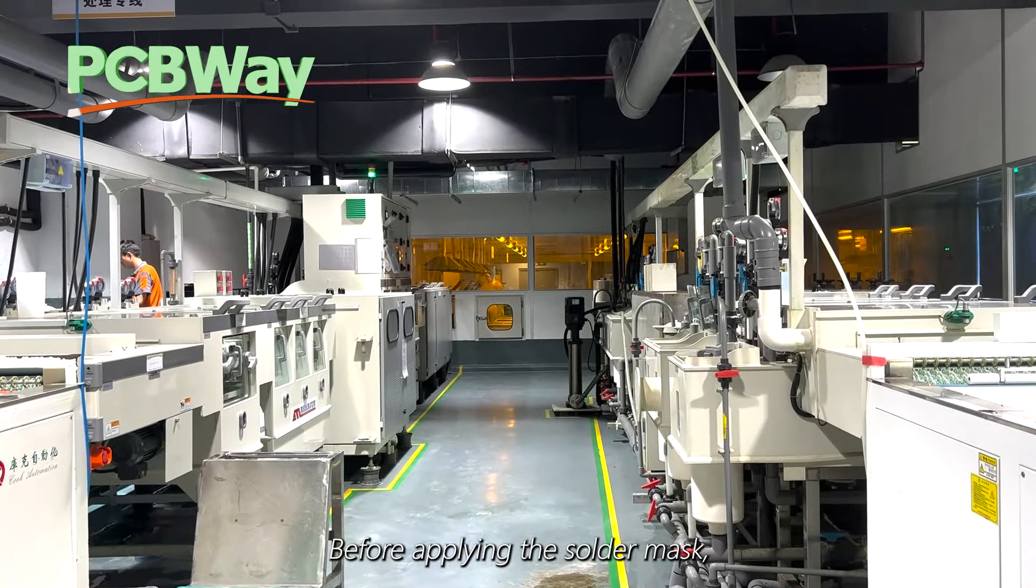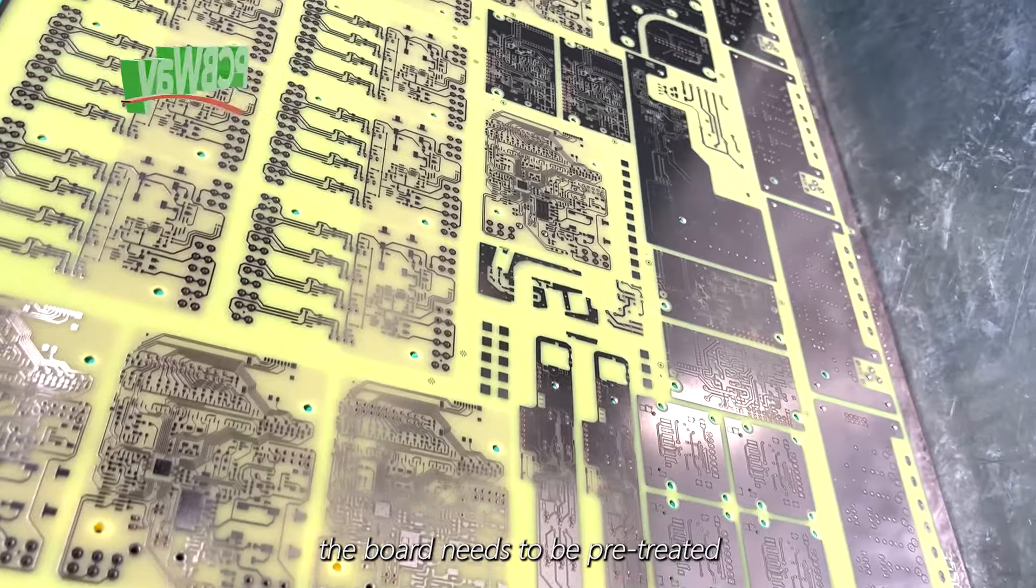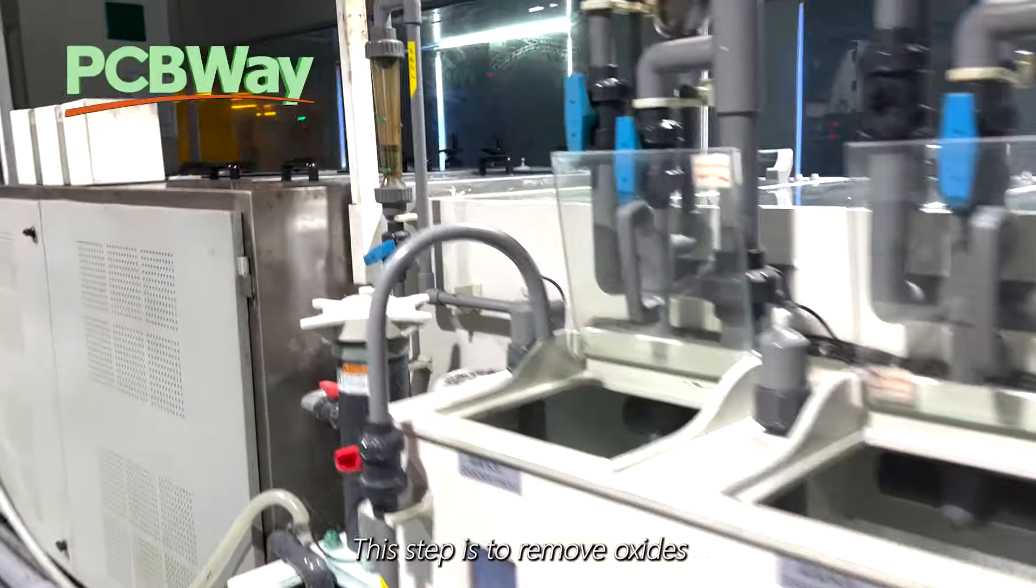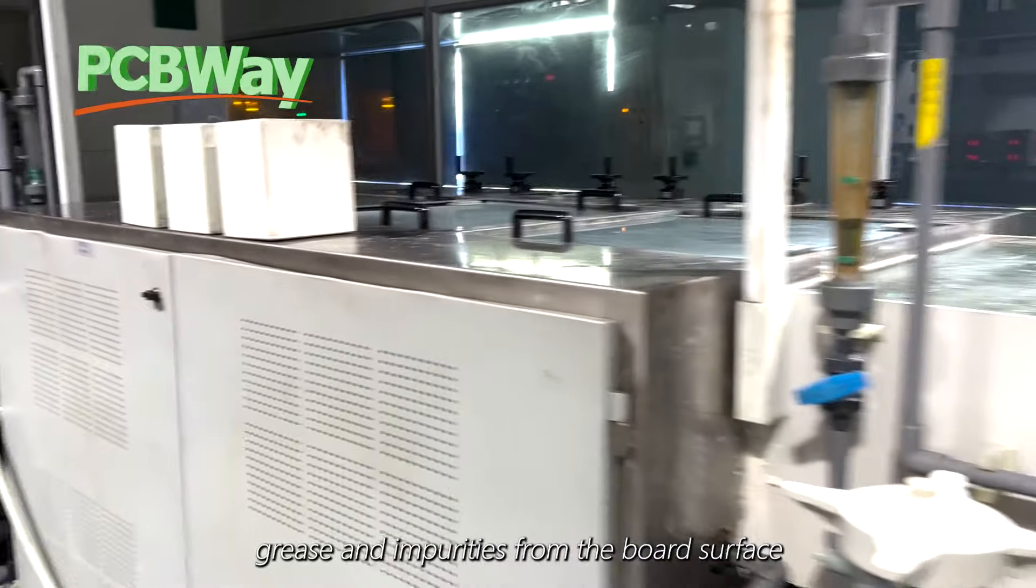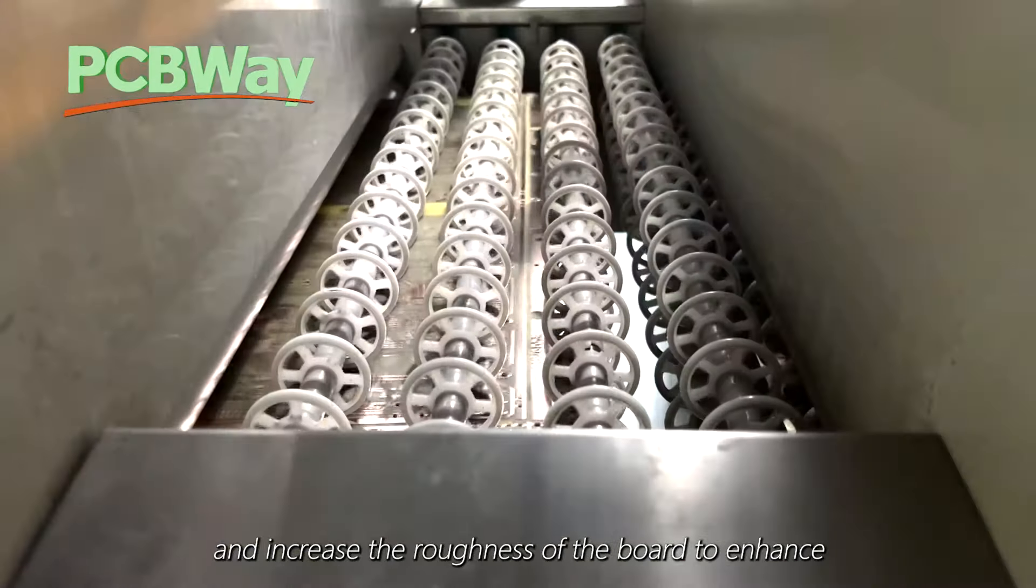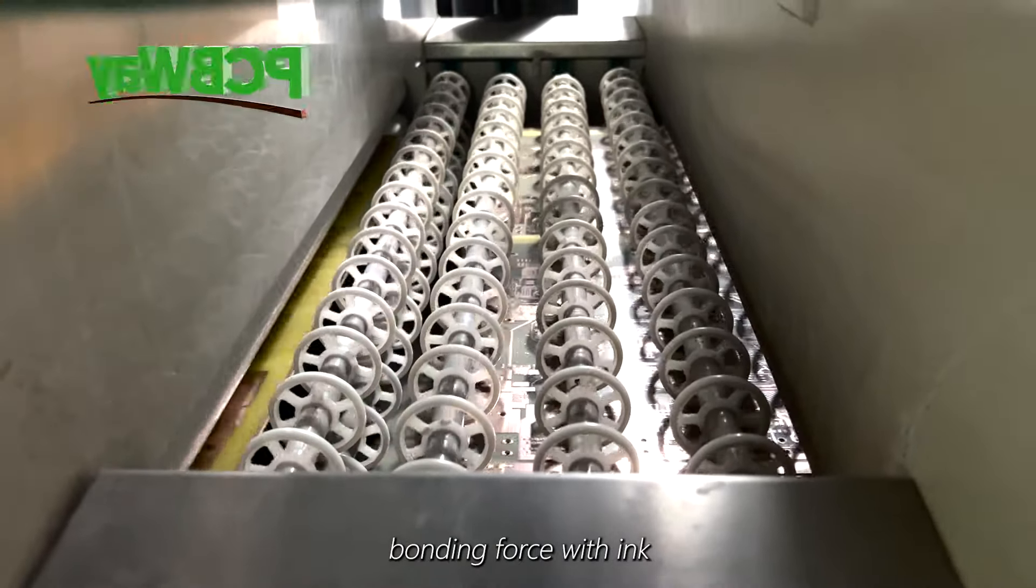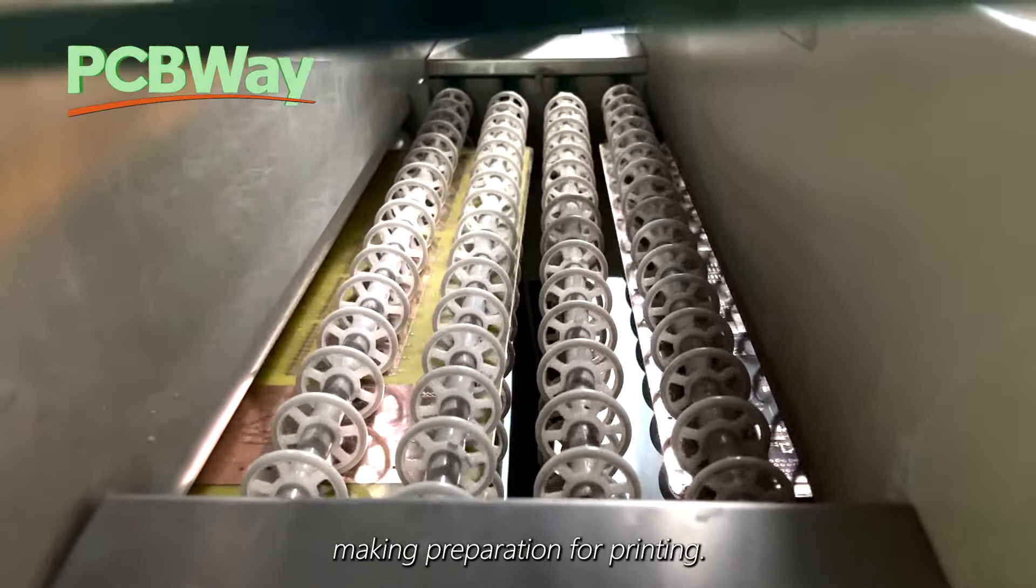Before applying the solder mask, the board needs to be pre-treated. This step is to remove oxides, grease, and impurities from the board surface and increase the roughness of the board to enhance bonding force with ink, making preparation for printing.